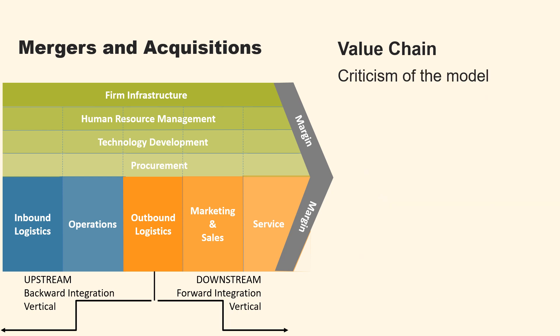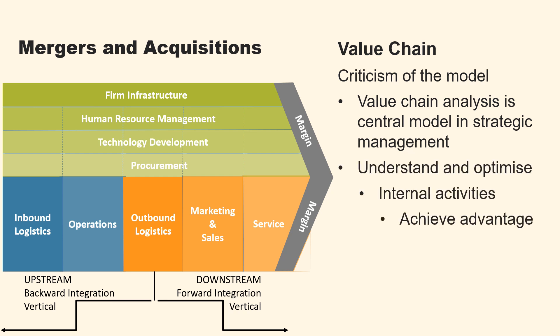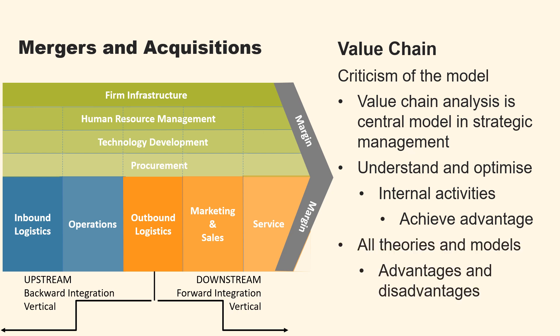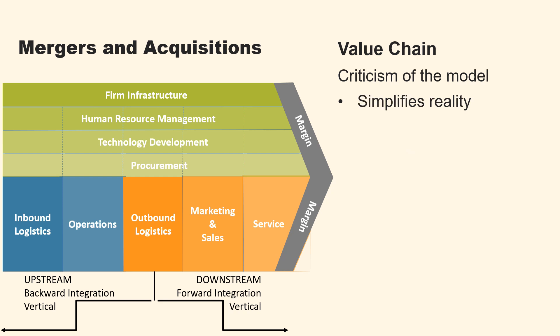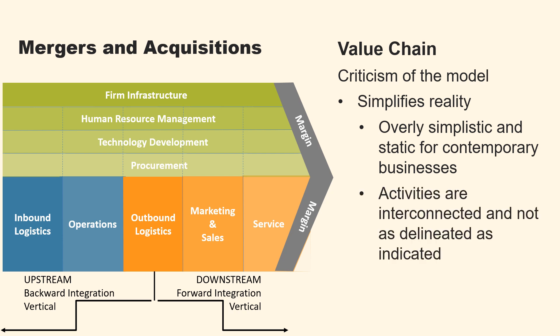Let us now consider a criticism of the model. Michael Porter's value chain analysis is a central model in strategic management, used to understand and optimize companies' internal activities to achieve a competitive advantage. However, as with all theories and models, Porter's value chain has advantages and disadvantages. The model simplifies reality: Porter's value chain might be considered overly simplistic and static for representing the complexities and dynamics of contemporary businesses, as activities are more interconnected and not as distinctly delineated as the model indicates.